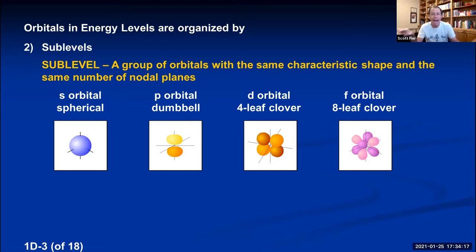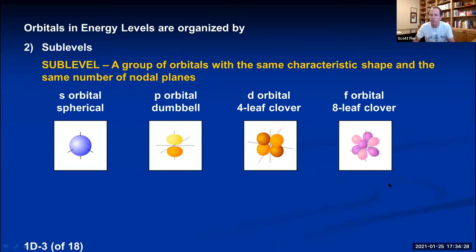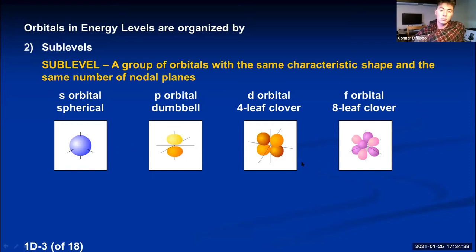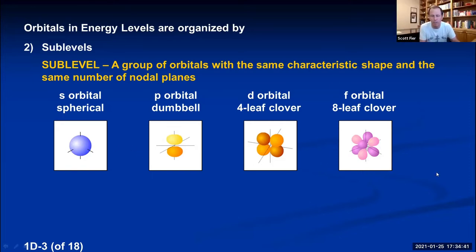For sublevels past F, they go alphabetically: G, H, I, J, etc. You can predict what a G orbital would look like — if S has 1 lobe region, P has 2, D has 4 lobes, F has 8, then G would have 16, like a 16-leaf clover. That's exactly right, and you could find pictures on Wikipedia.